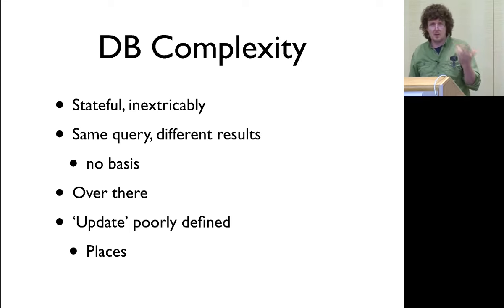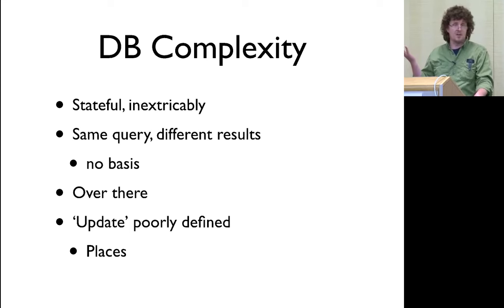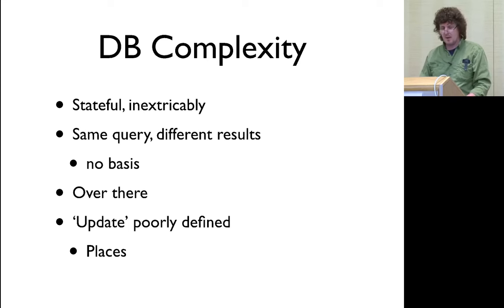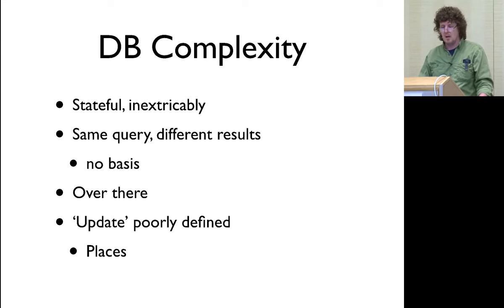Another source of complexity with databases is the whole notion of update. Relational databases have some mathematical foundation, especially on the query side, but on the update side it's another miracle-occurred situation. You have this relational model, transactions happen, and somehow the relational model has been changed — exactly what that means can be very nebulous. With non-relational databases, the notion of what it means to update something gets incredibly weak. Most of these systems share a characteristic: the notion of what's happening is based around a place orientation for state, which is catastrophically bad.